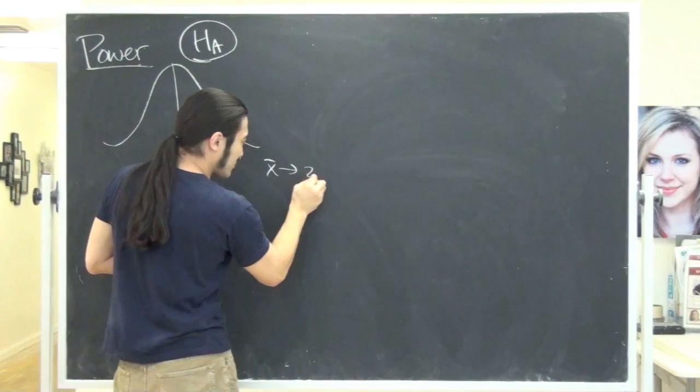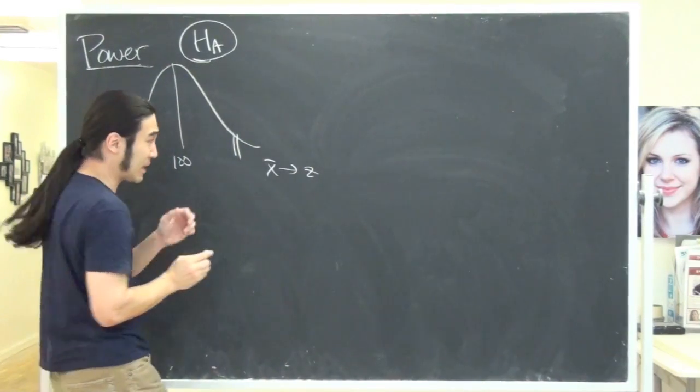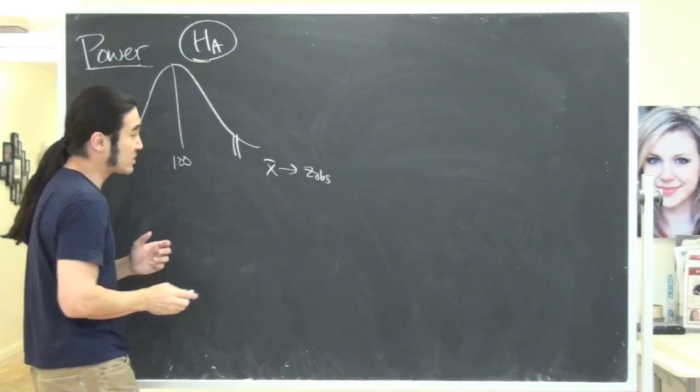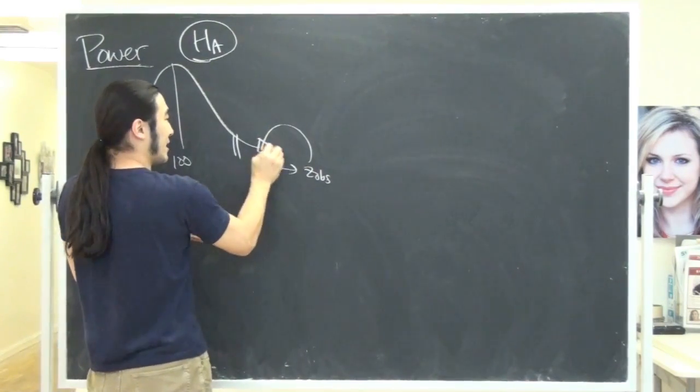And let's say right now you're doing a z-test. You translated it to some sort of z-observed score, just to make things concrete. And that thing happened to land here.